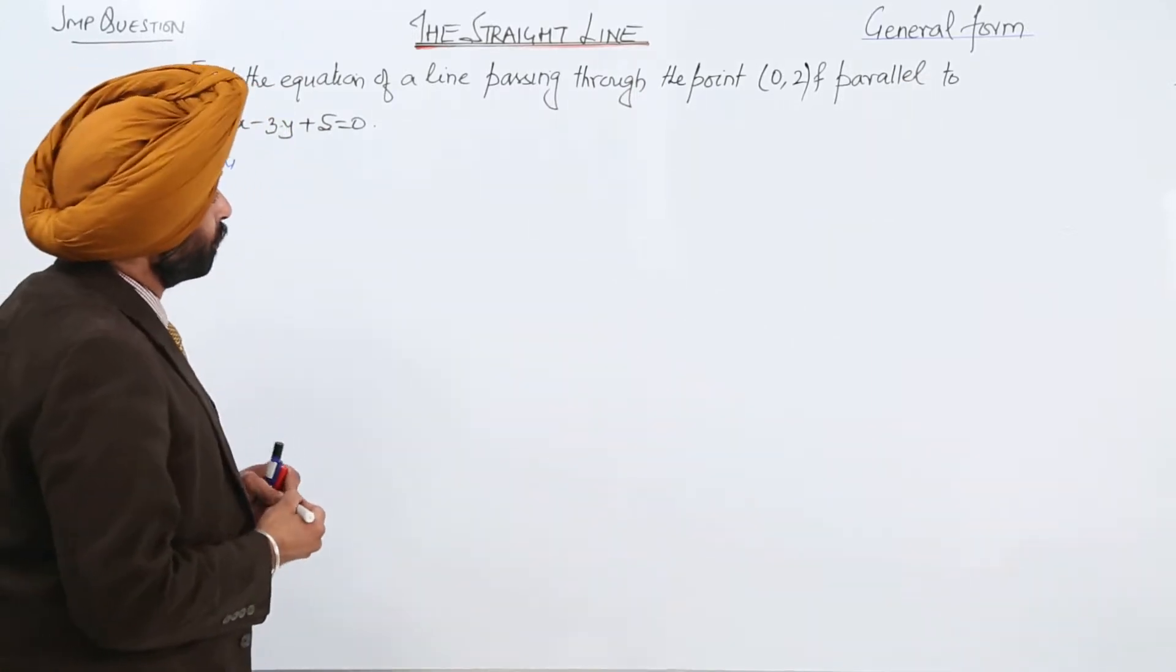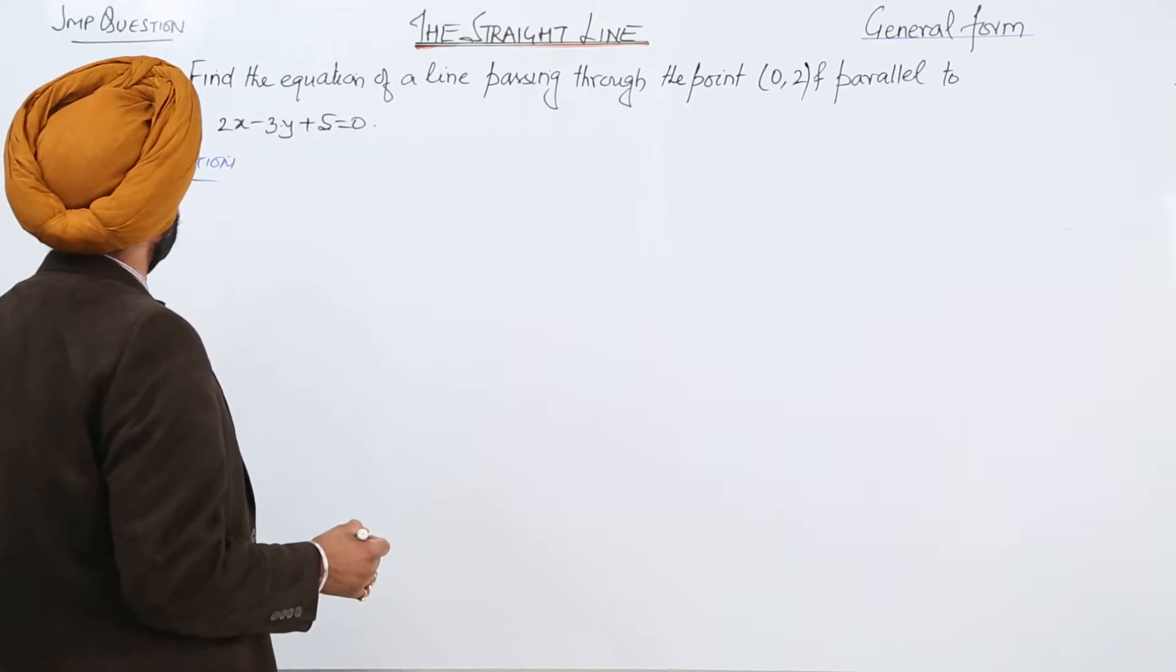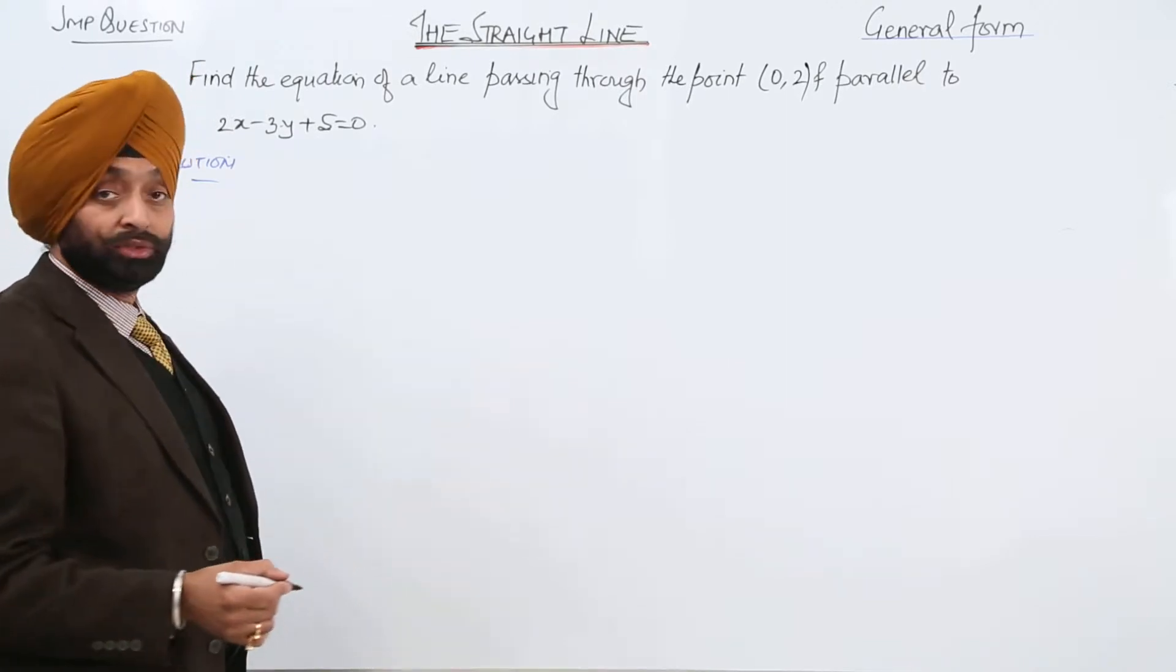We have to find the equation of a line passing through the point (0,2) and parallel to 2x - 3y + 5 = 0.